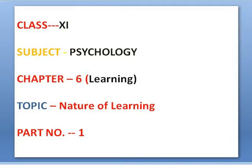Good morning everyone, welcome again. Today we will start Chapter 6, the name of this chapter is Learning. At the time of birth, every human baby is equipped with the capacity to make a limited number of responses. These responses occur reflectively whenever appropriate stimuli are present in the environment. As a child grows and matures, he or she becomes capable of making diverse types of responses, including identifying images of persons as one's father, mother, grandfather, grandmother, using a spoon when eating food, and learning how to identify alphabets and write words. The child also observes others doing things in specific environmental conditions and imitates them.